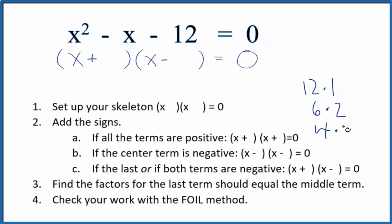or 4 times 3. So if we had -4 times 3, that would give us -12. -4 plus 3 would give us that -1 there. So we'll put a -4 in and a positive 3.